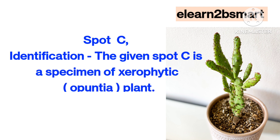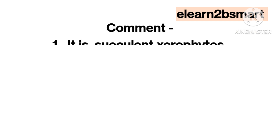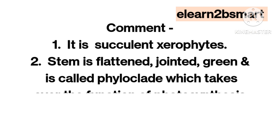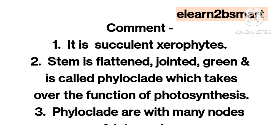Spot C. Identification: The given spot C is a specimen of a xerophytic plant. Comment 1: It is a succulent xerophyte. The stem is flattened, jointed, and green, and is called a phyloclade, which takes over the function of photosynthesis. Phyloclades have many nodes and internodes.